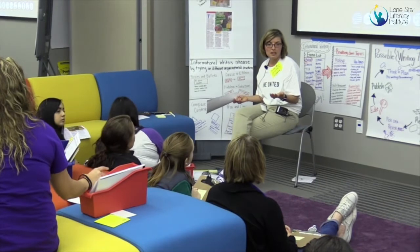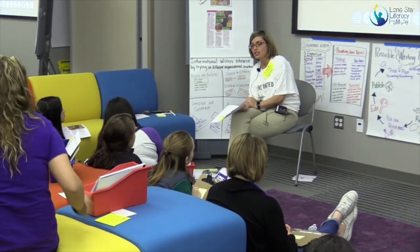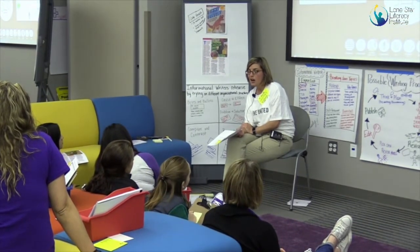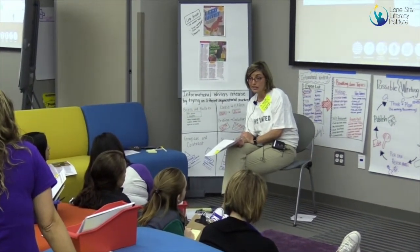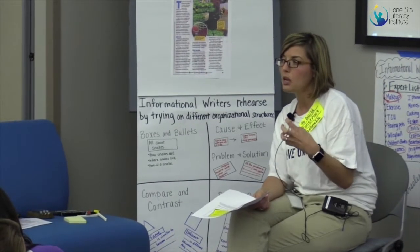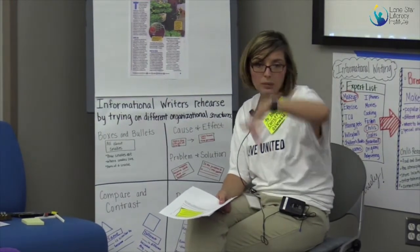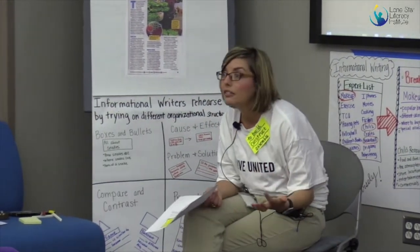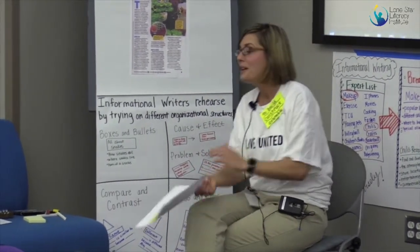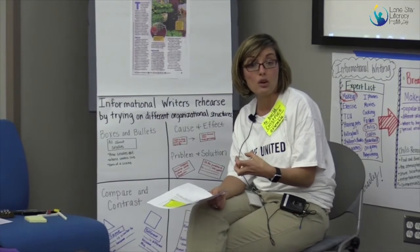As nonfiction readers we have to start paying attention to those structures, because those mental models are what help us hold on to what we read. When we have to come back later and summarize the text or make more meaning from it, that mental model helps us hold on to it. With fiction, stories all kind of go the same way — the plot mountain, up and down. But in nonfiction, there are so many different ways the text can go, which is really cool because as writers we get to choose. And as readers, when we pay attention to how the text is going to go, we can hold on to more of what we're trying to understand.